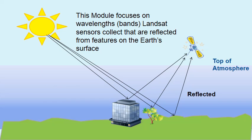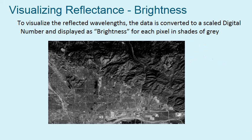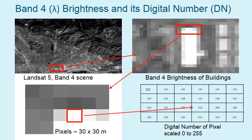We're going to focus on the reflected energy from different objects on the Earth's surface captured by Landsat. This data is presented as a brightness value or digital number. This is an image from Landsat showing different shades of grey or brightness. In a Landsat 5 Band 4 example, zooming in, we can see a 30 by 30 meter pixel which has a brightness or digital number of 254.